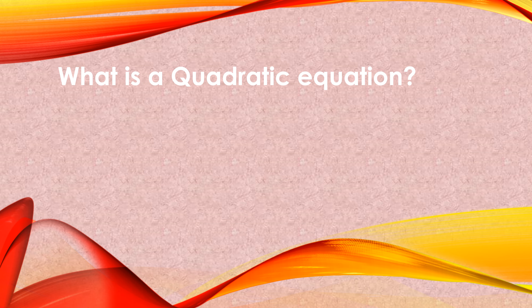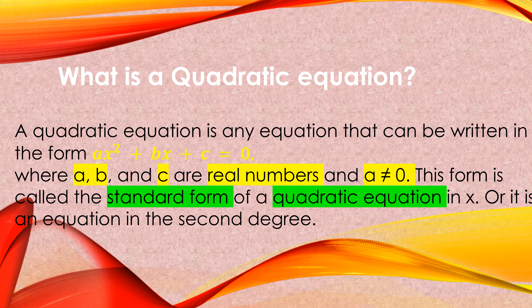So what is a quadratic equation? A quadratic equation is any equation that can be written in the form AX squared plus BX plus C is equal to 0, where A, B, and C are real numbers — meaning that A, B, and C are both constants. And A should not be equal to 0.